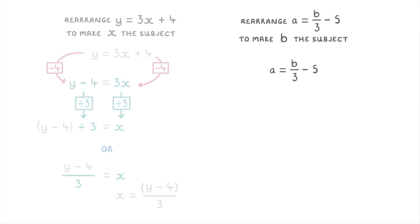For this second question, you need to get the b by itself. So first you need to get rid of the minus 5 by adding 5 to both sides, so that you get a plus 5 equals b over 3. Next you need to get rid of the divided by 3 fraction by multiplying both sides by 3, but just like in the last question, this means that you have to multiply everything on the left hand side by 3.